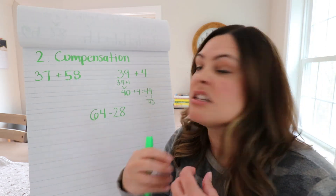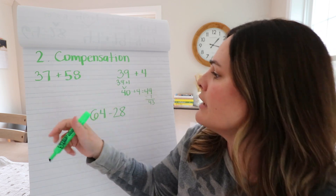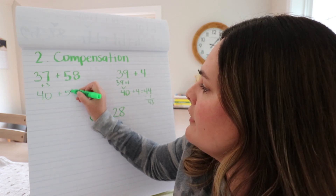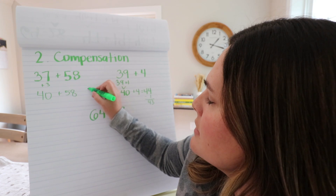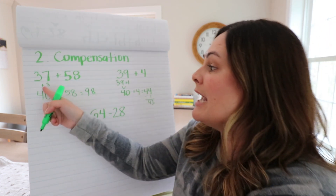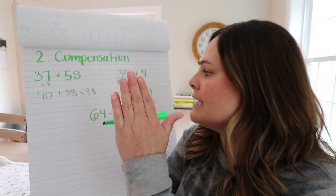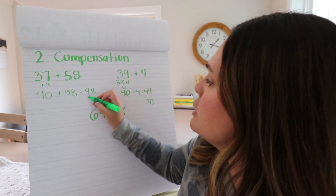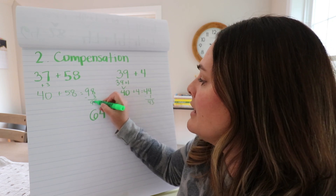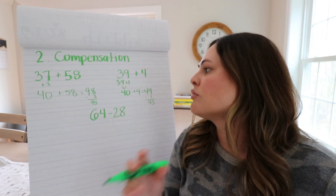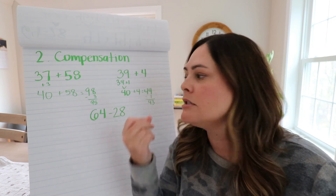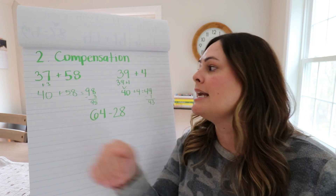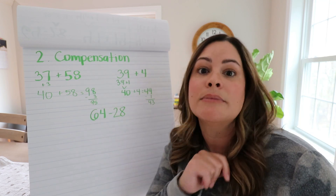Here's another example: 37 plus 58. To compensate and make friendlier numbers, we can add three to 37 to make 40 plus 58, which gives us 98. Then since we added that three, we need to take it away — 98 minus 3 is 95. Because if we add plus three and minus three to the same equation, we're essentially adding zero. Students could also have added two to the 58 to make 60, added the numbers, and then taken it away at the end, arriving at that same sum of 95.